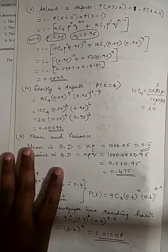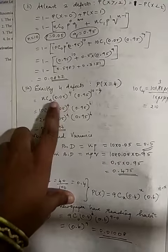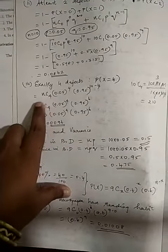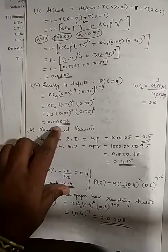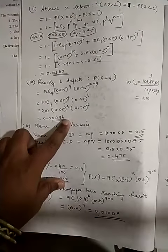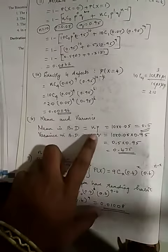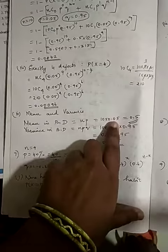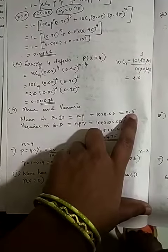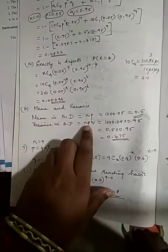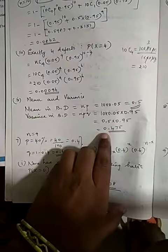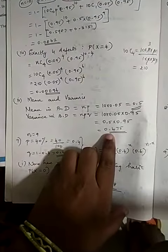For exactly 4 defects, we substitute x = 4 and get 0.00096. The mean is np = 10 × 0.05 = 0.5, and the variance is npq = 10 × 0.05 × 0.95 = 0.475.